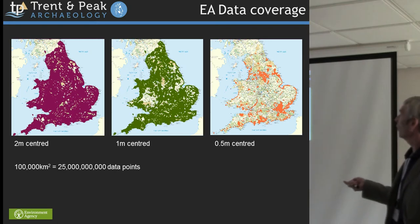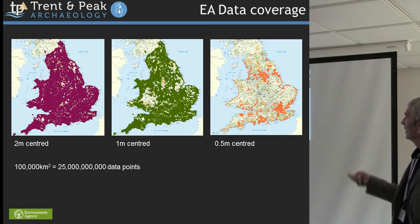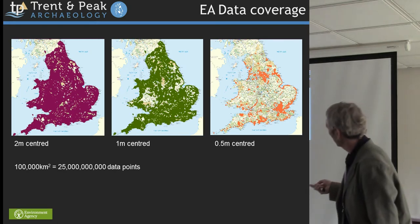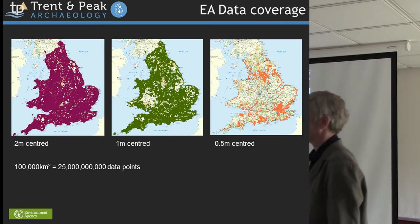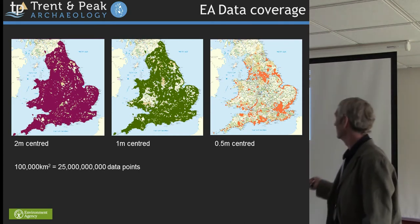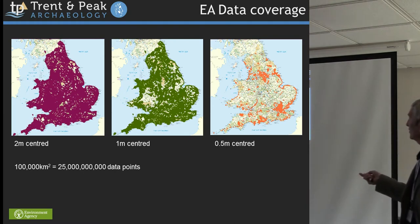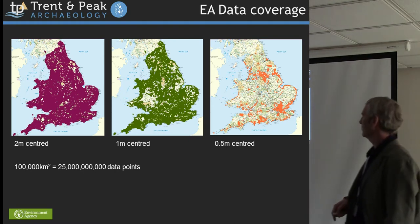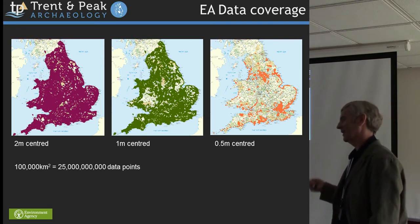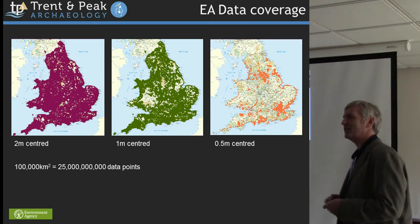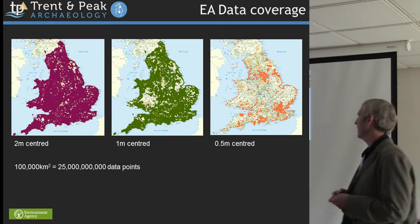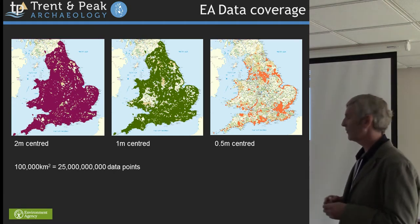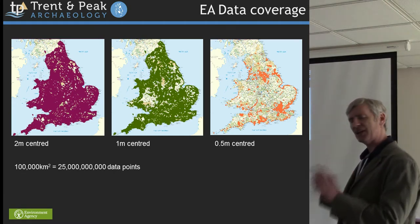The one-metre centre data set covers up to 50% or more of the landscape — you're talking about 75 billion points. Throwing in some of the half-metre centre data, which has so far been more tightly focused on specific areas, we're looking at a data set of England and Wales with perhaps 100 billion elevation points in vast areas of the country, and it's freely available.